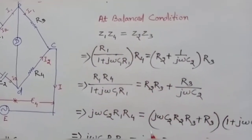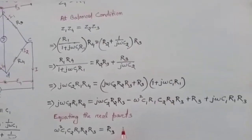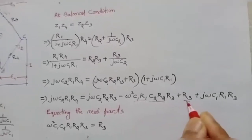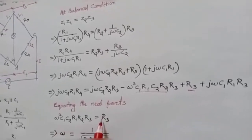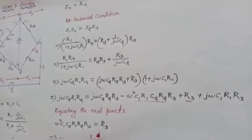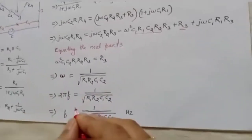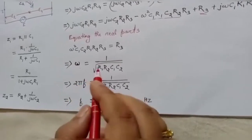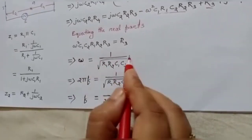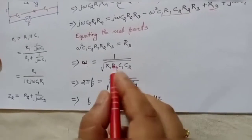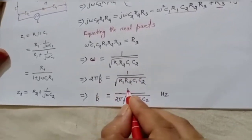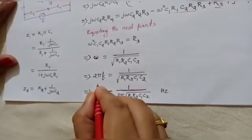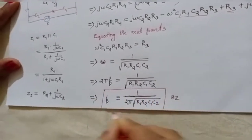After further solving, when we equate the real parts of both sides, we can find the frequency. The angular frequency ω is found, where ω = 2πf. The result is: ω = 1 / √(R1·R2·C1·C2), and therefore the frequency is f = 1 / (2π√(R1·R2·C1·C2)). This is the unknown frequency we can measure using Wien's Bridge.